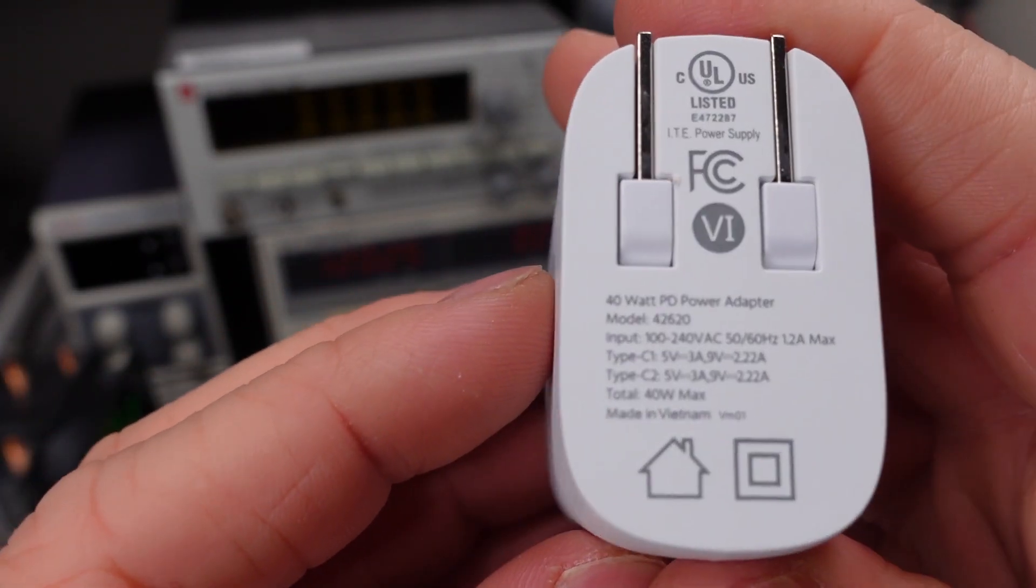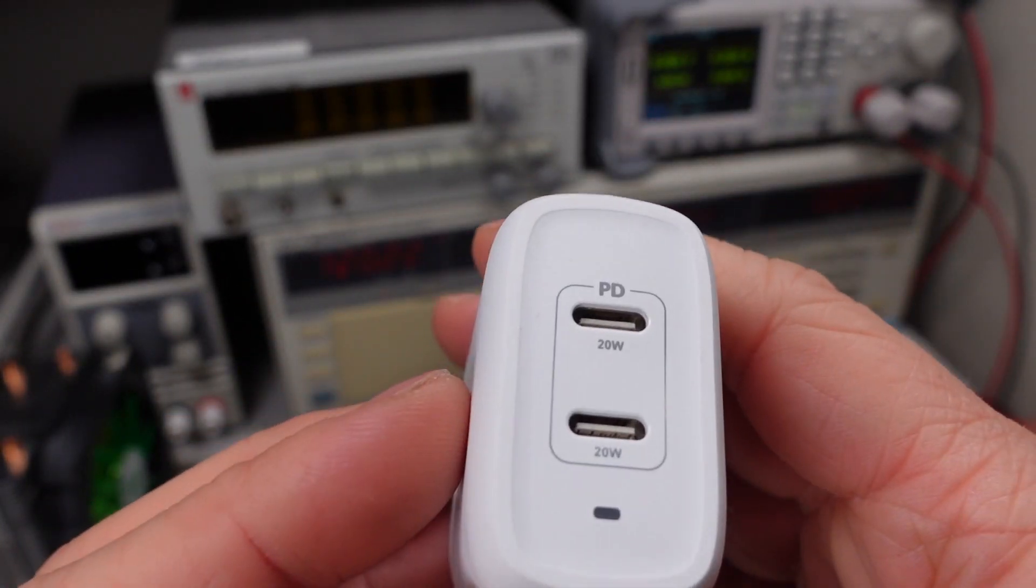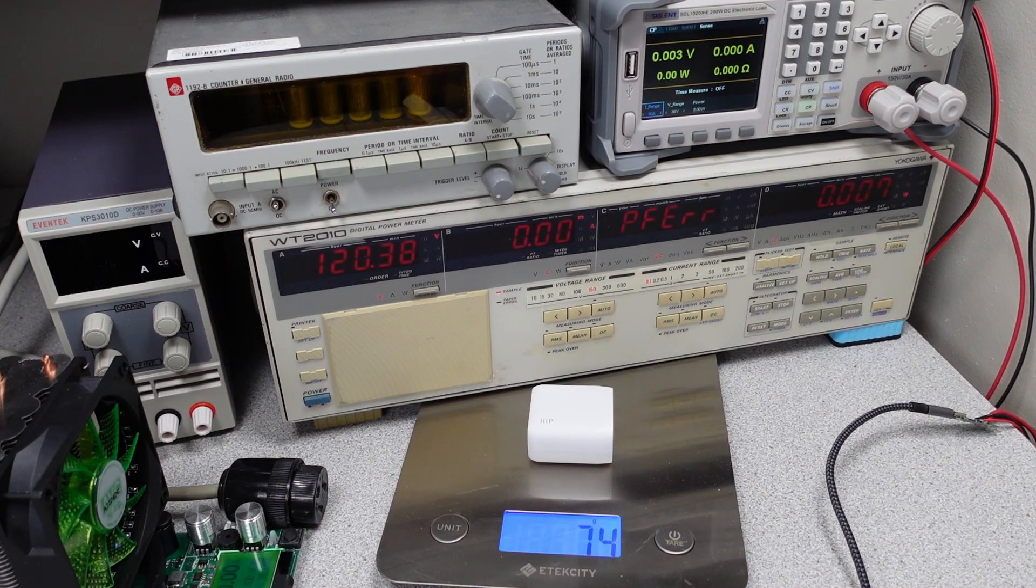It doesn't actually say Monoprice anywhere on it, so it's essentially just an unbranded device. The packaging weighs 20 grams. The power adapter weighs 74 grams.